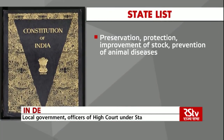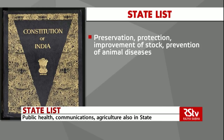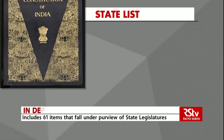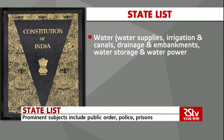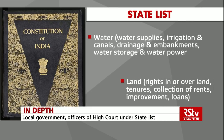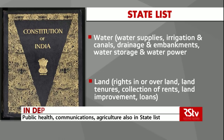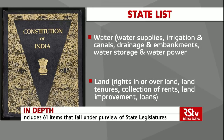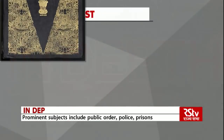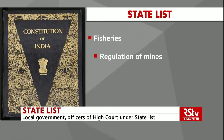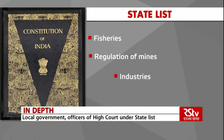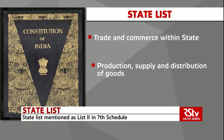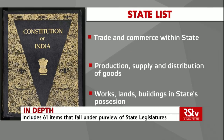Some other subjects in the state list include preservation, protection and improvement of stock and prevention of animal diseases. Veterinary training and practice. Pounds and the prevention of cattle trespass. Water, which includes water supplies, irrigation and canals, drainage and embankments, water storage and water power. Land, which includes rights in or over land, land tenures including the relation of landlord and tenant, the collection of rents, transfer and alienation of agricultural land, land improvement and agricultural loans. Fisheries. Regulation of mines and mineral development subject to the provisions of the union list. Industries. Gas and gas works. Trade and commerce within the state. Production, supply and distribution of goods. Works, lands and buildings vested in or in the possession of the state.